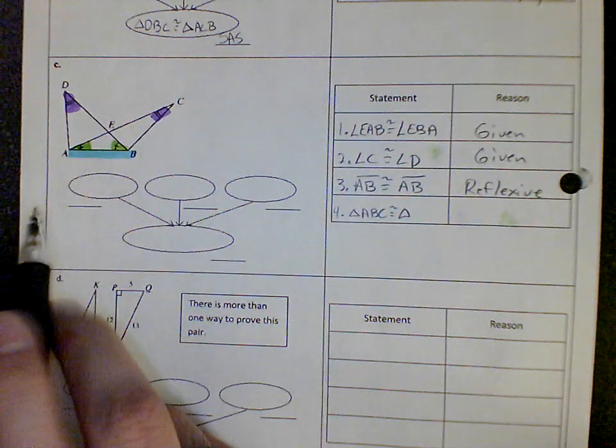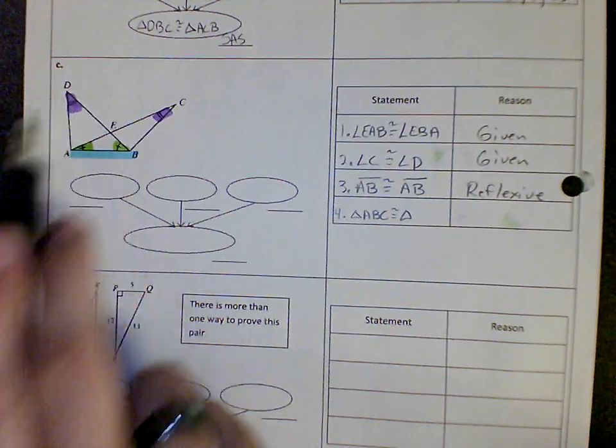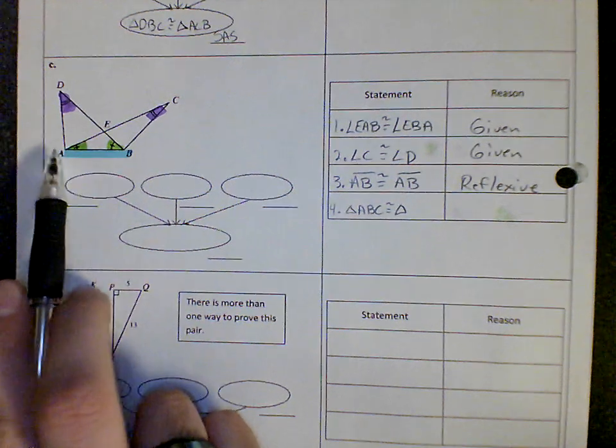So we're going to do green, blue, purple over here. So green, blue, purple. Triangle BAD.